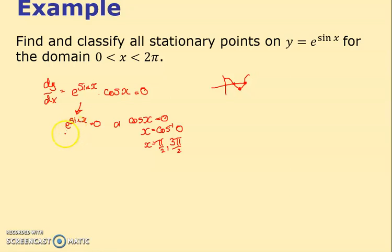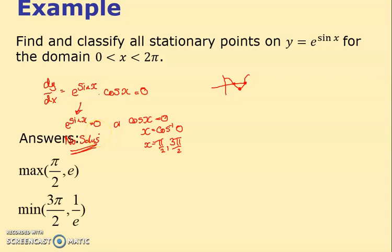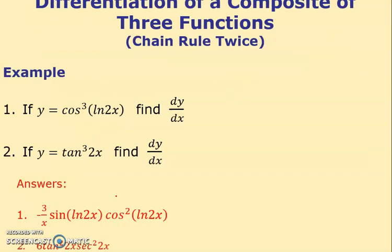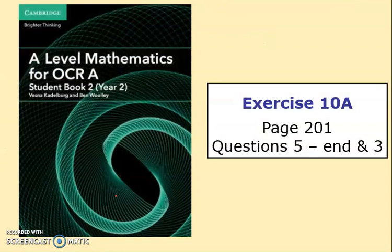As for e^(sin x) = 0 — we know e to any power is never equal to zero, so this has no solutions. Therefore the stationary points are at x = π/2 and x = 3π/2. Substituting back gives y = e and y = 1/e respectively. A graph is shown, and there's more to do in the next lesson.